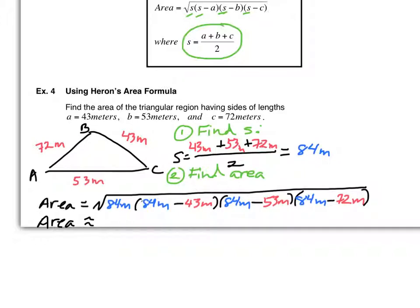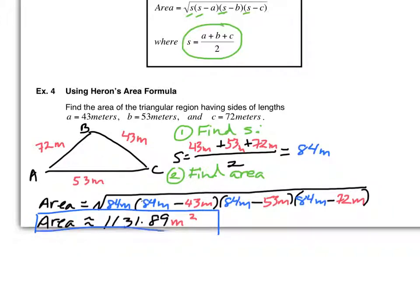The result is approximately 1,131.8 meters squared. Area is always meters squared — note that inside the square root we have meters times meters times meters times meters, which is meters to the fourth, and when we take the square root of meters to the fourth, we get meters squared. This does answer the question, and you're done. Any other issues, problems, or concerns?